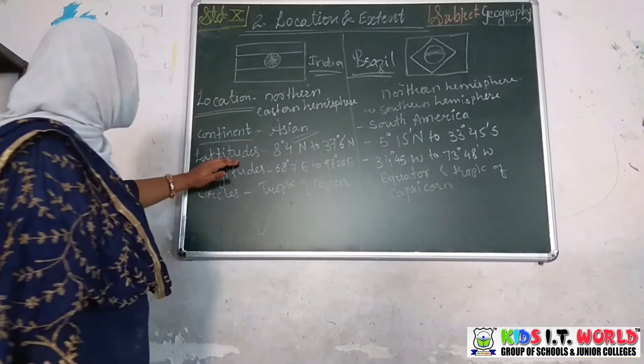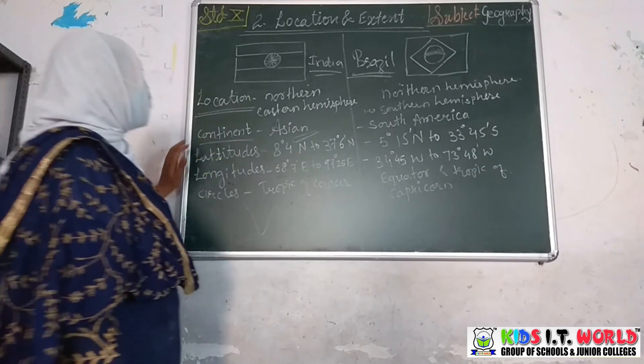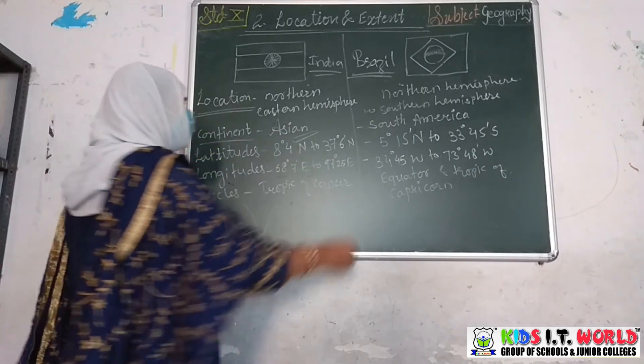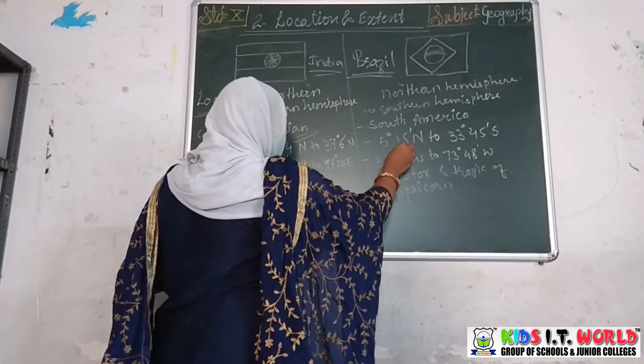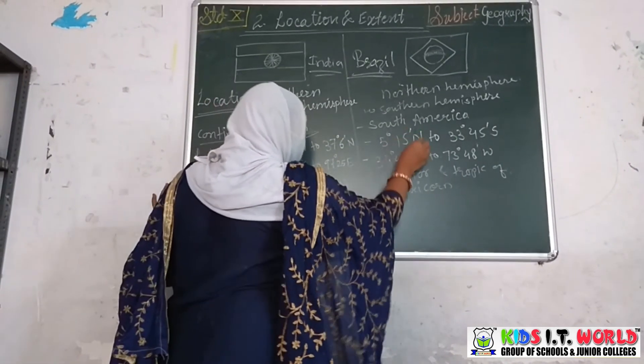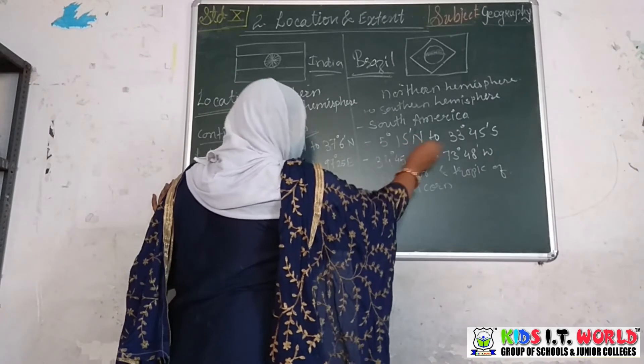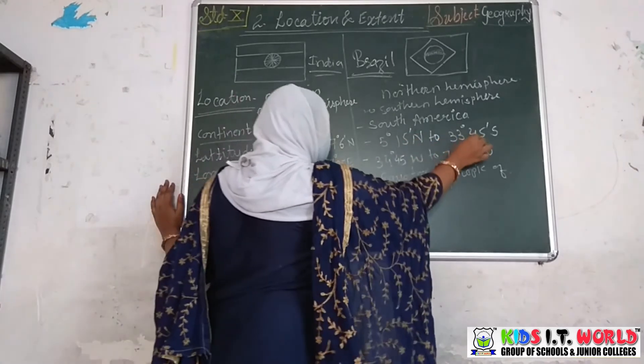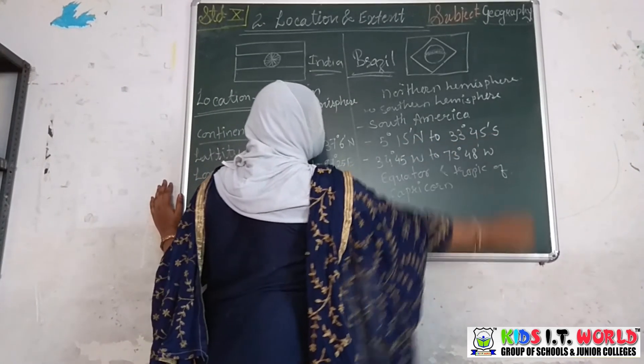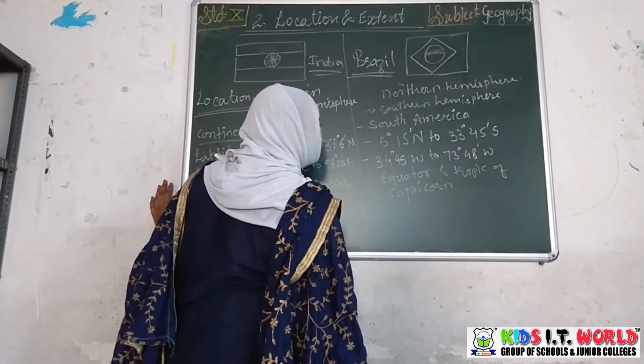The latitudinal extent of Brazil is from 5 degrees 15 minutes North to 33 degrees 45 minutes South.